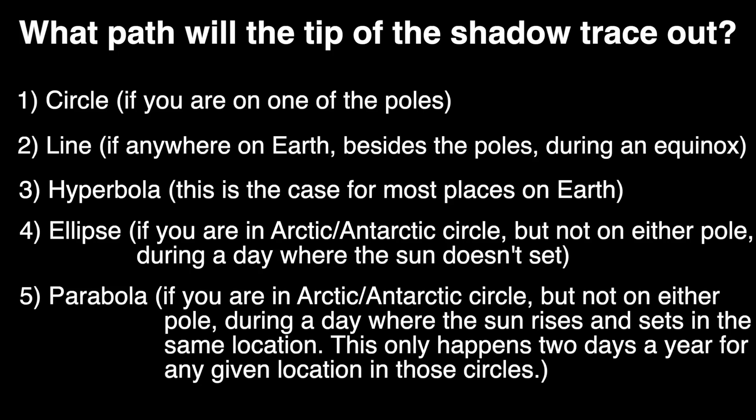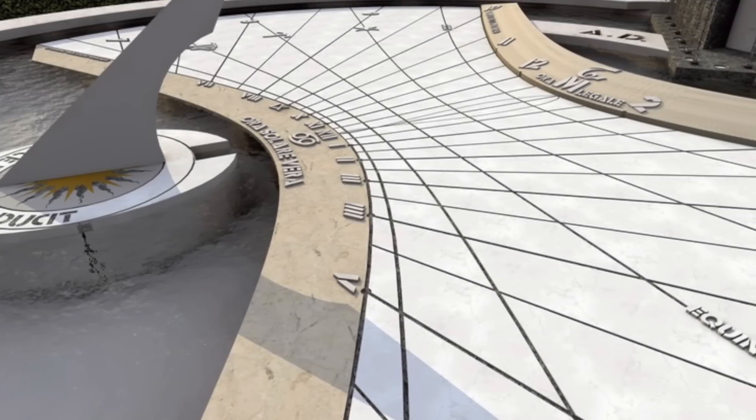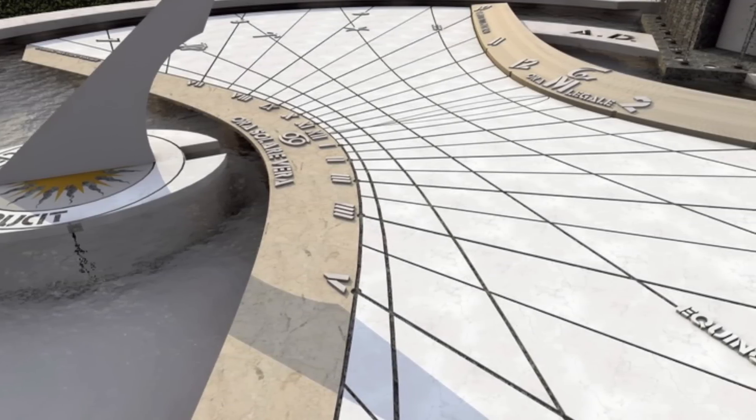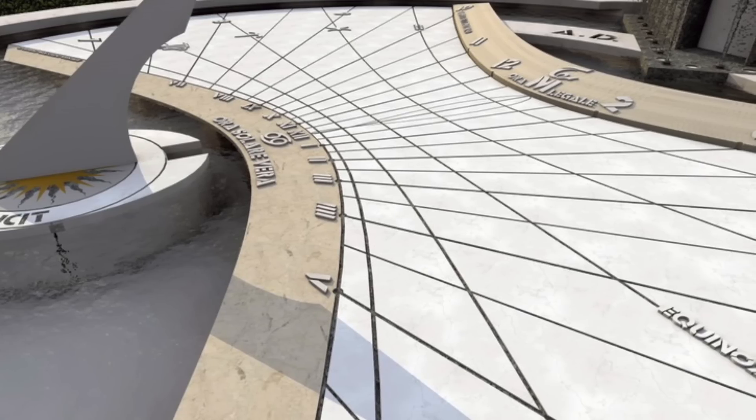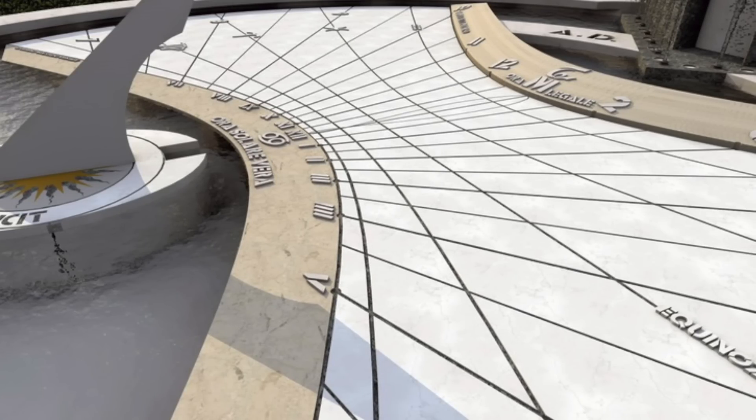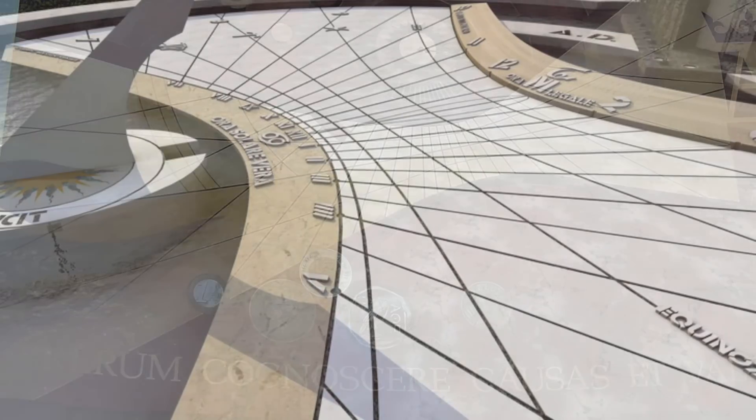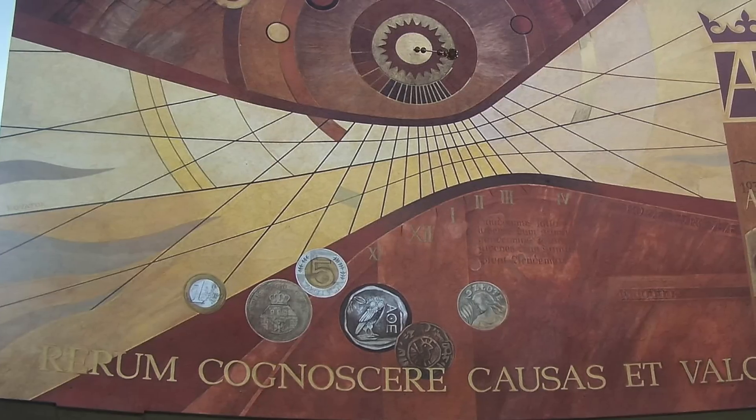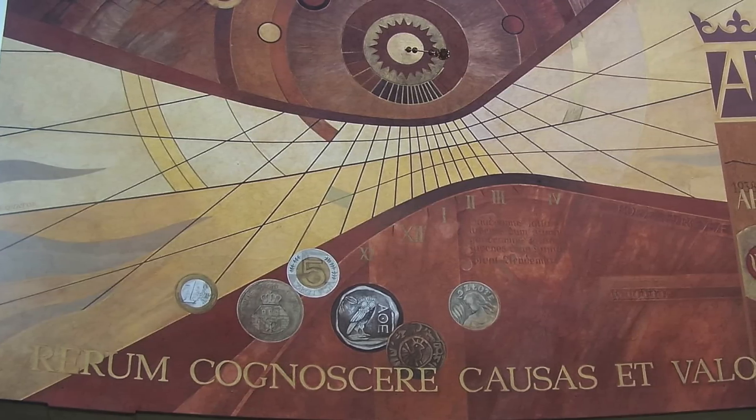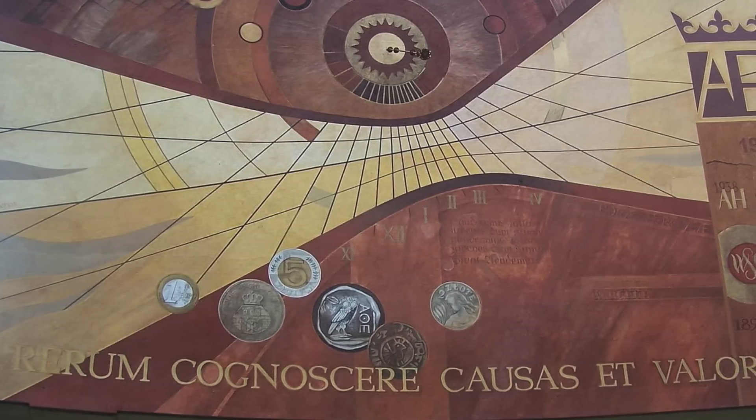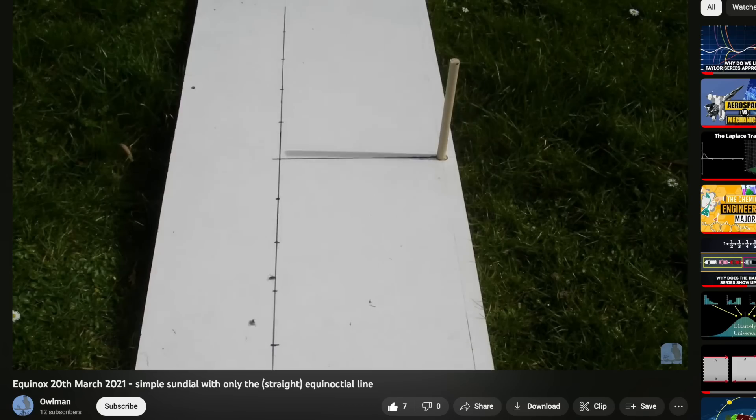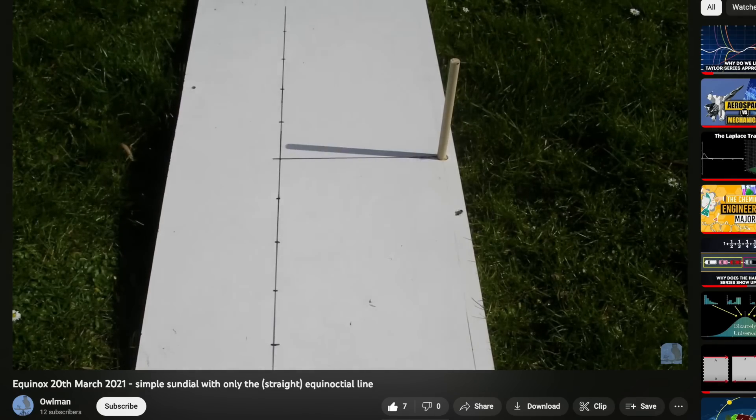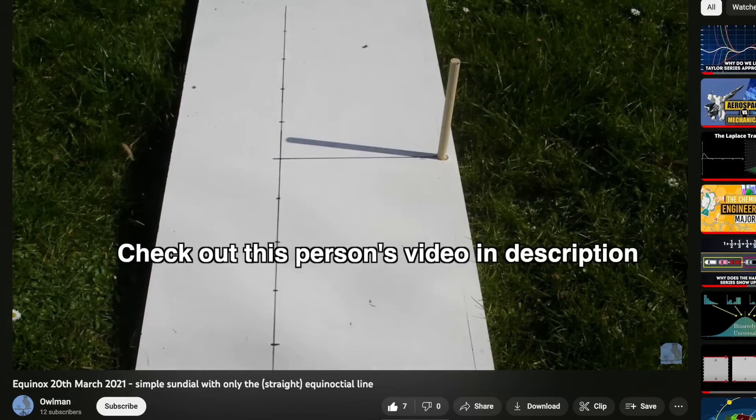And finally, of course, the actual real world application of this would be sundials, which do exist based on what we've seen here. Where the path of the shadow along one of those conic sections, usually hyperbolas, tells us not only the time of day, but also the day of the year. Where the more curved the hyperbola, the closer you are to the summer or winter solstice. And when you have a straight line, no matter where you are, besides the poles, you know it's the autumn or spring equinox. Boom. Sundials are cool.